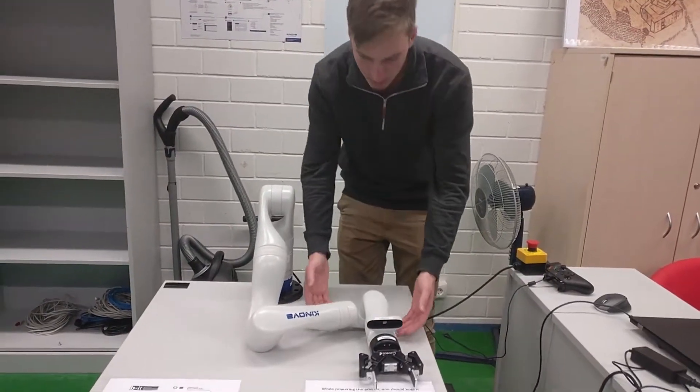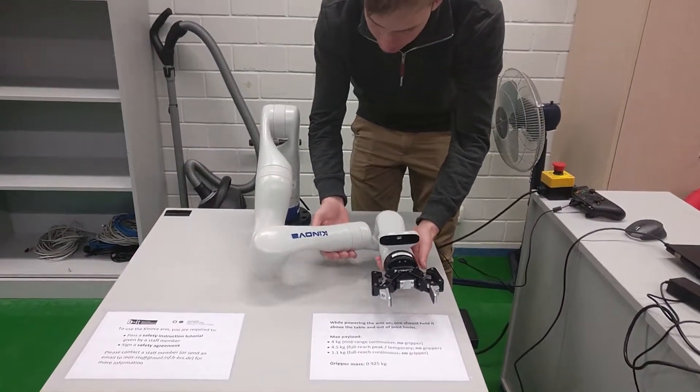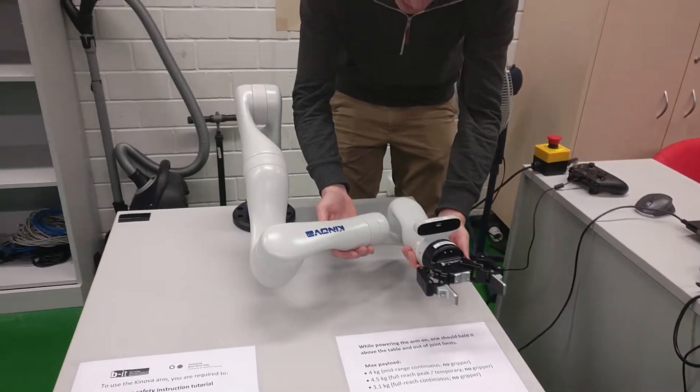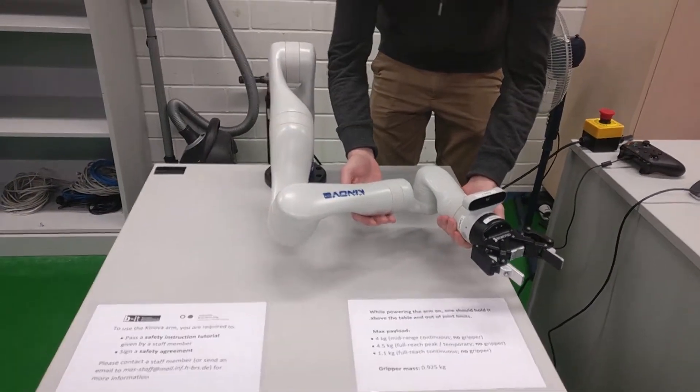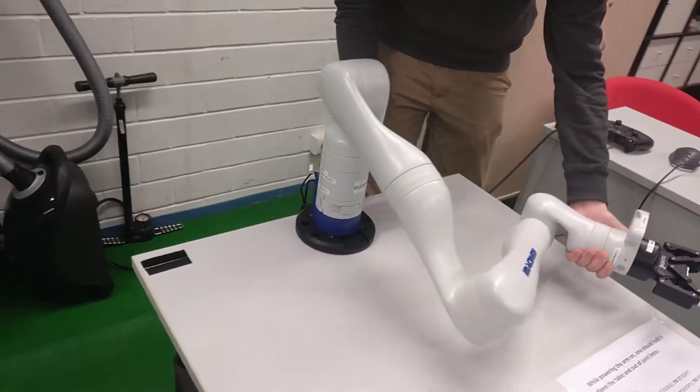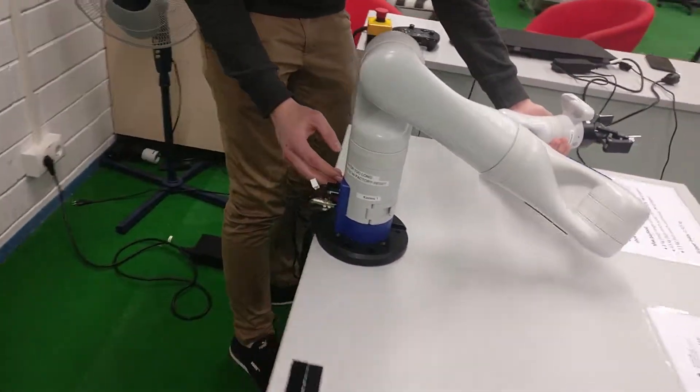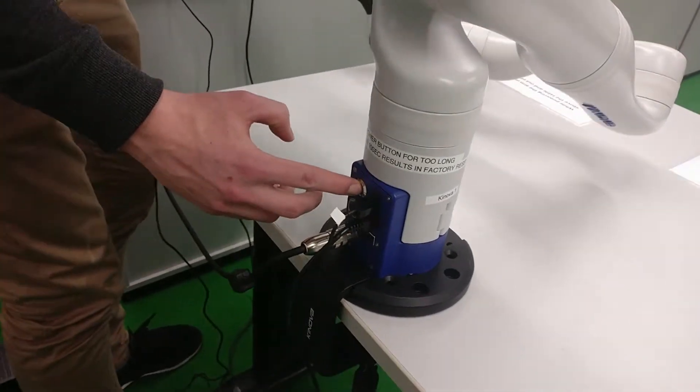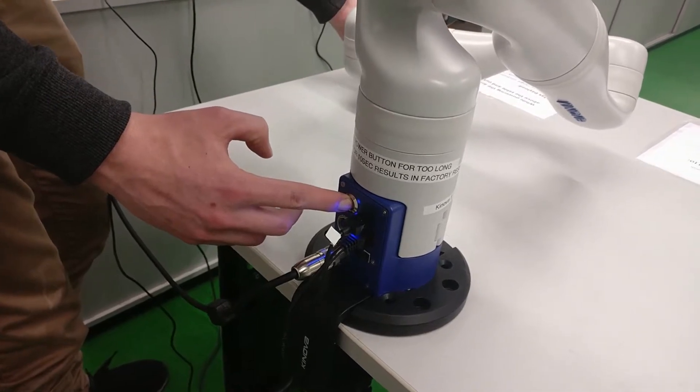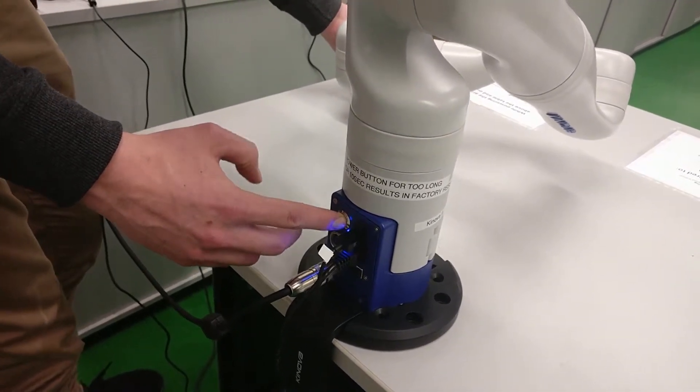When starting up the arm, you lift it off the table and make sure that none of the joints are at their limits. And then once you've done that, press the start button for three seconds. One, and two, and three, and release.